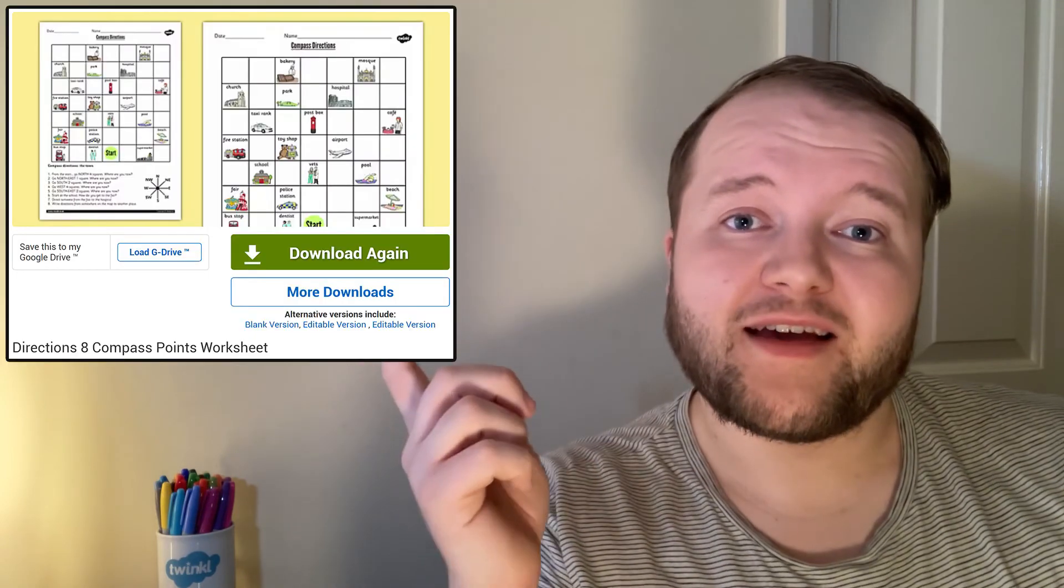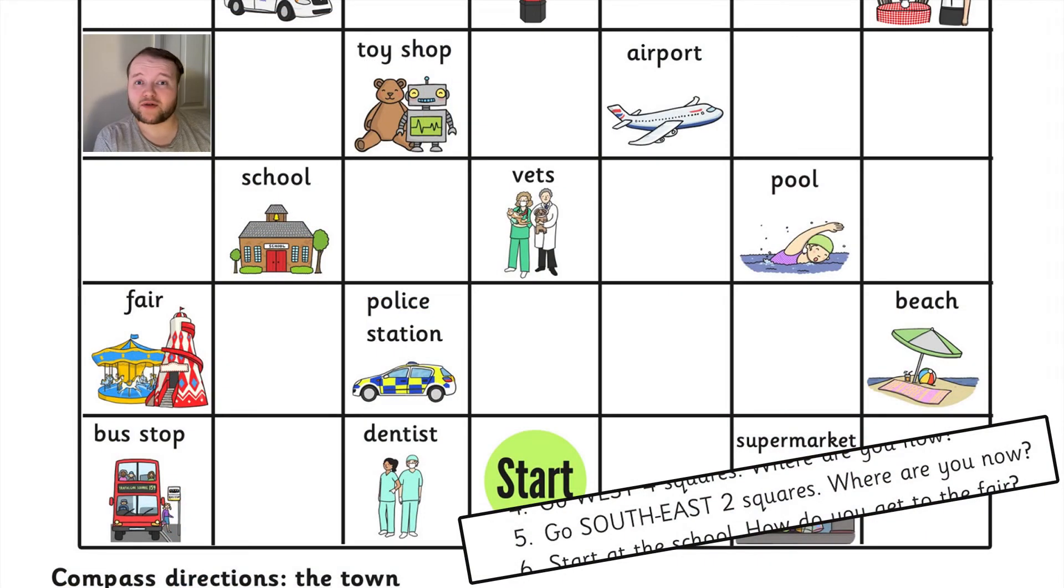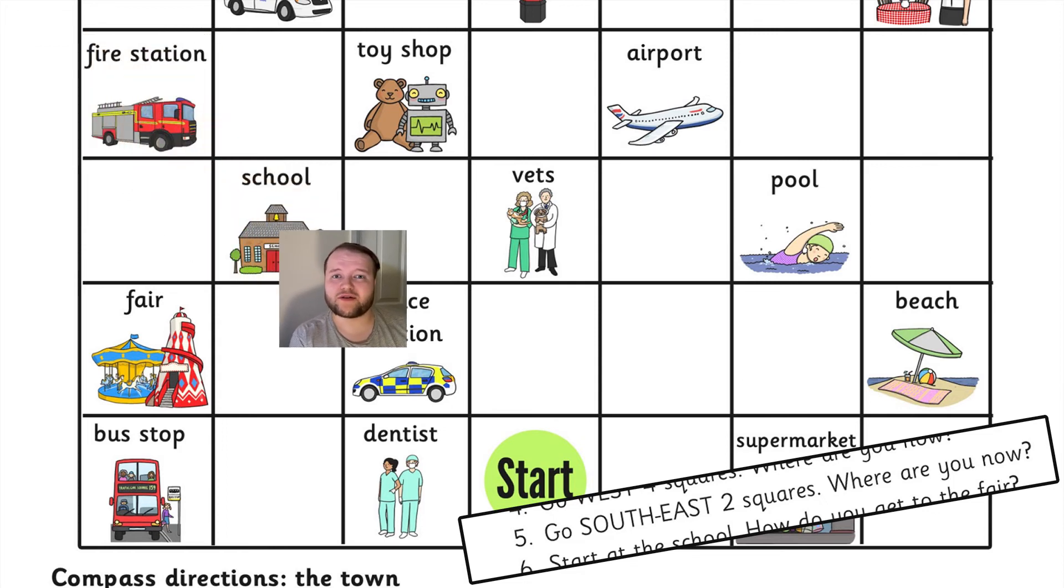Then, to practice using their knowledge of cardinal and intercardinal directions within a map, try this eight compass points directions worksheet. Using a prompt, like go southeast two squares, your learners will need to use their knowledge of compass points to travel around the town.